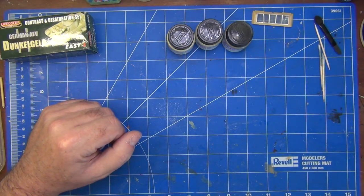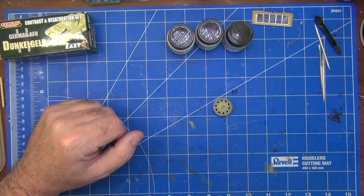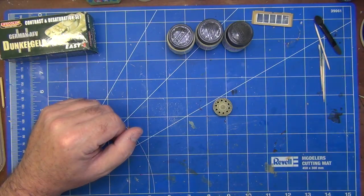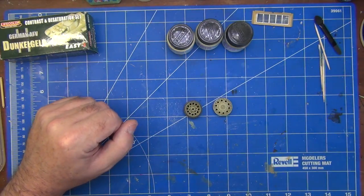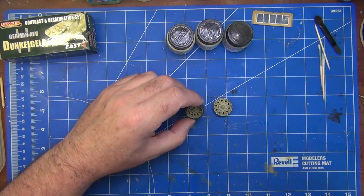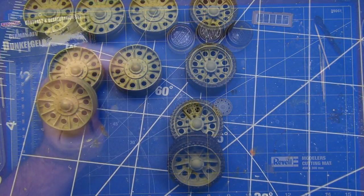I've already sprayed those on the wheels. So, here's an example here. There's a steel wheel, and there's one with the rubber tread on it. And it worked good.